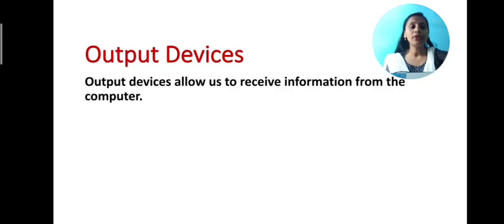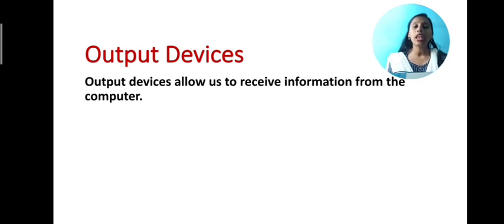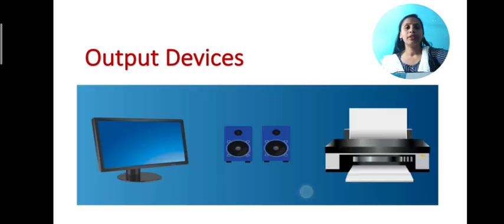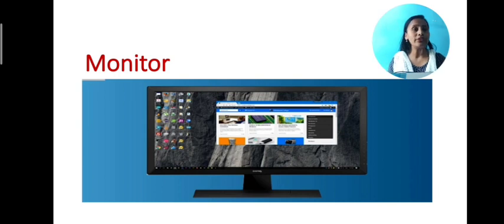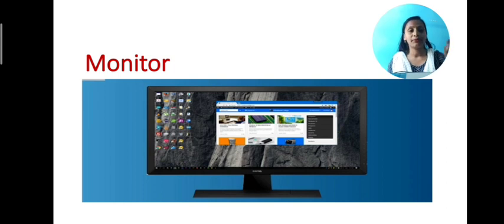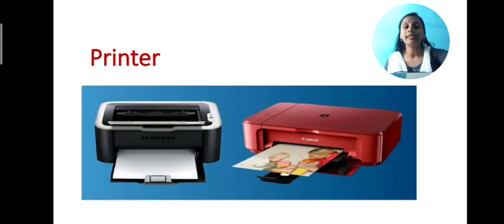Now let's talk about output devices. Output devices allow us to receive information from the computer. The main output devices of a computer are monitor. The monitor is a display device. It displays the result on the screen as an output.